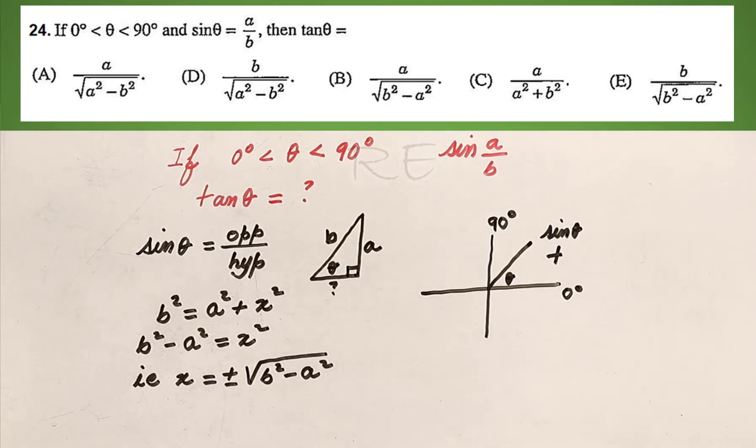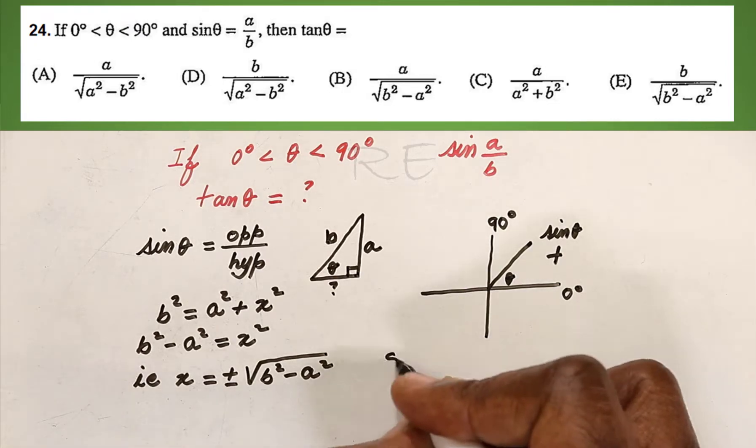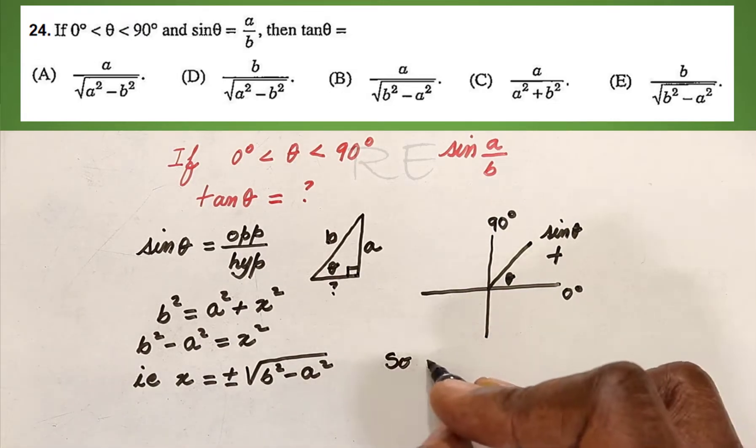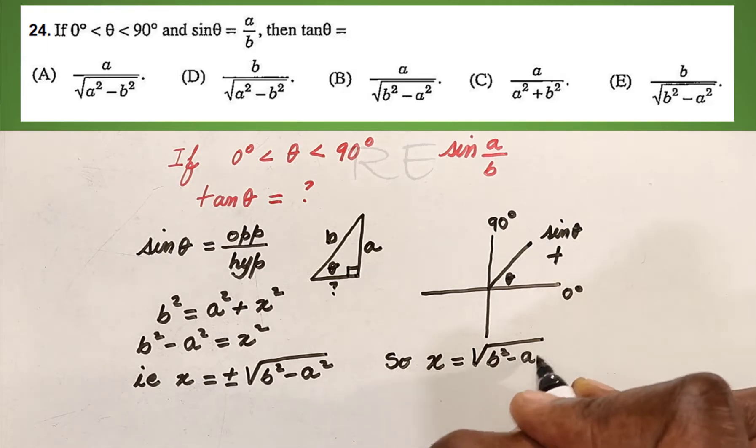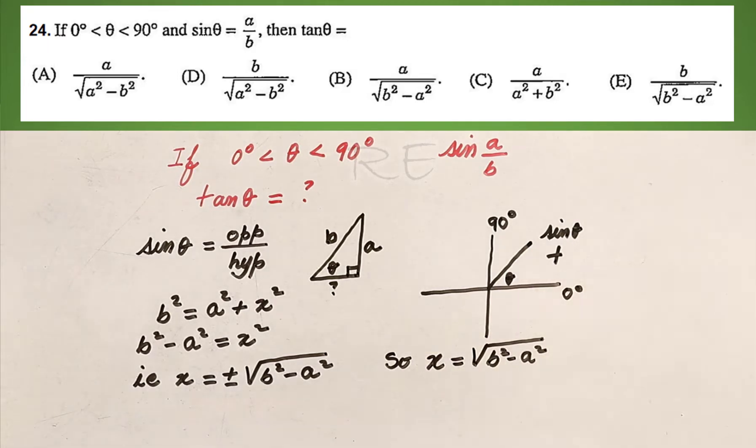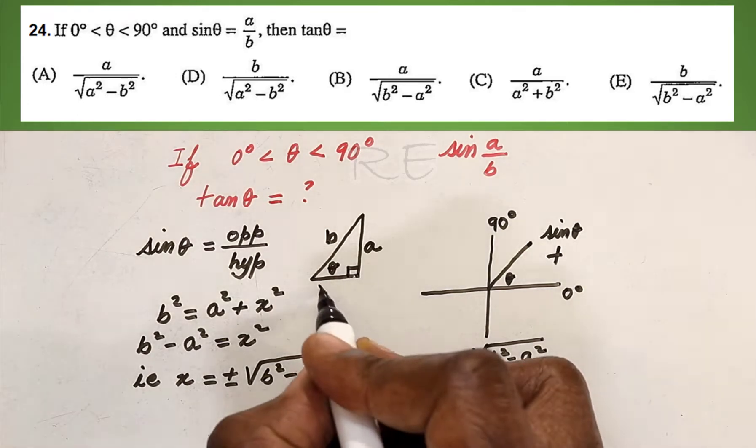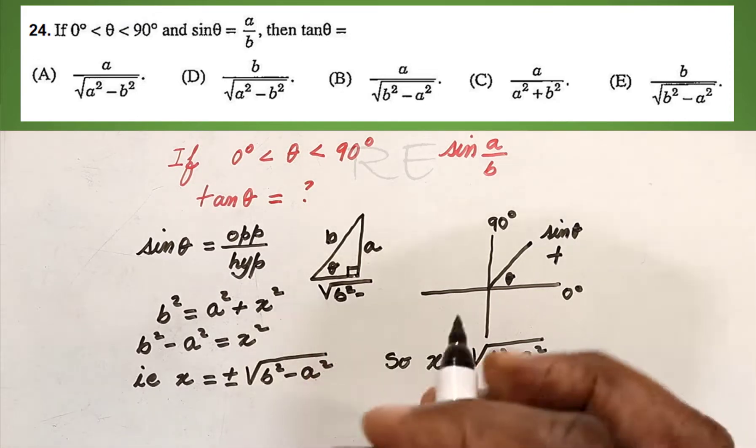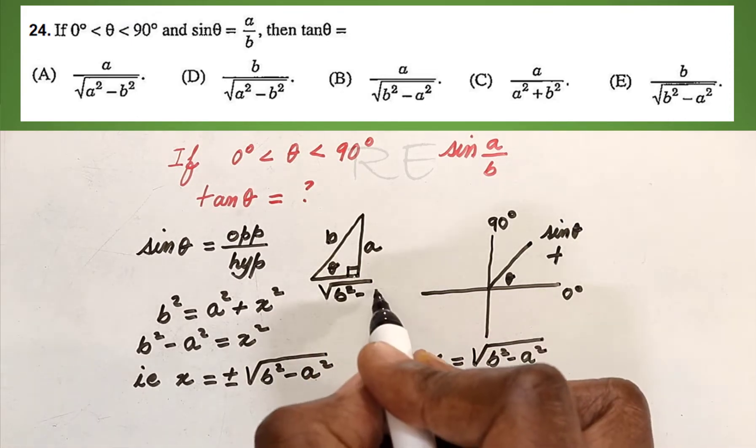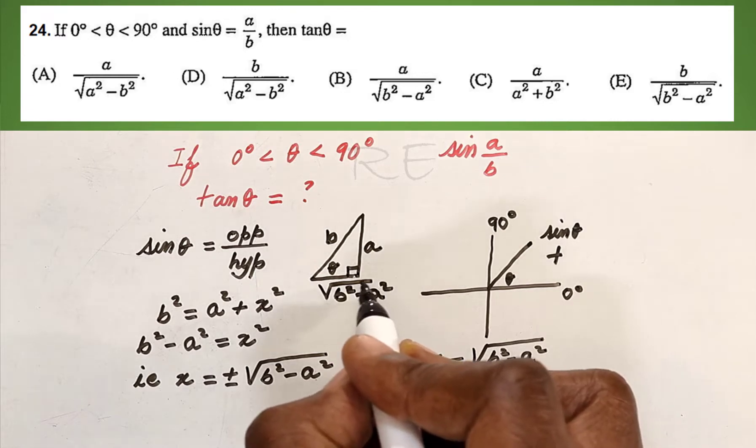Therefore, we are going to select as our right answer X equal to square root of B squared minus A squared. Now, we will label the missing side as square root of B squared minus A squared.